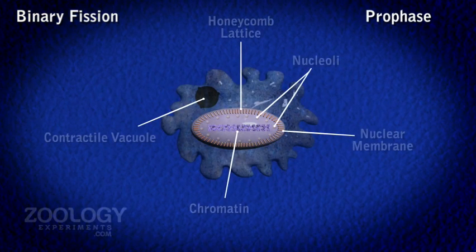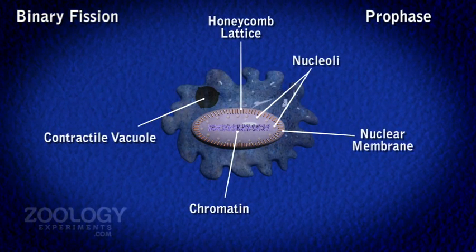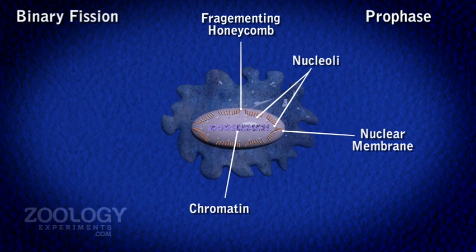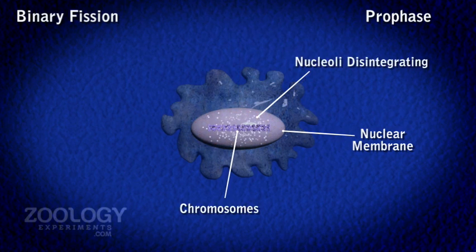During prophase, amoeba withdraws its pseudopodia and becomes almost rounded. The cytoplasm loses its transparency to a large degree and the contractile vacuole disappears. The honeycomb-like lattice underneath the nuclear membrane first fragments and then disappears. The nucleoli also disintegrate.